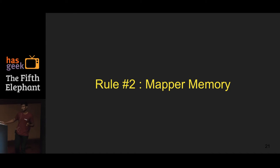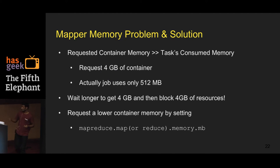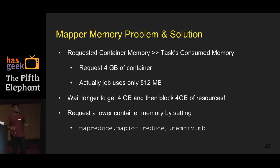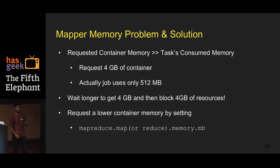Another rule is mapper memory. When you run a MapReduce job you request a certain container size from the resource manager. Suppose a user requests 4 GB but the job only uses 500 MB inside that container. The problem is you're waiting longer for a 4 GB container to get allocated, and once allocated you're blocking 4 GB of cluster resources while only needing 500 MB. The fix: request lower memory by setting mapreduce.map.memory.mb for mapper containers, or mapreduce.reduce.memory.mb for reducer containers. Dr. Elephant provides all these suggestions to users.